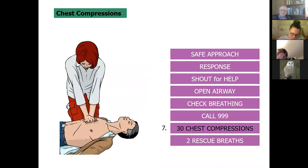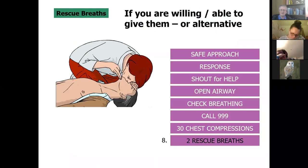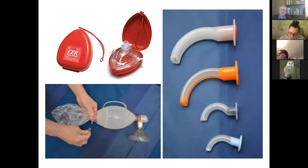Start with 30 chest compressions in an adult, and then if you're willing and able to do so give two rescue breaths. A rescue breath means you seal your mouth to their mouth, block their nose, and give a short sharp breath into their lungs — two of those. Look for a rise and fall to ensure air is going in and coming out, but don't delay too much between breaths.